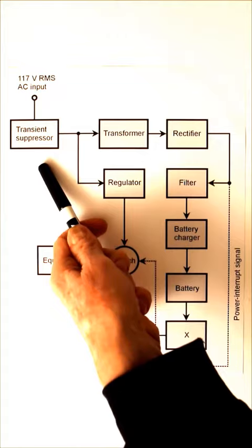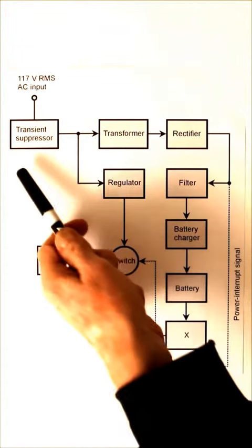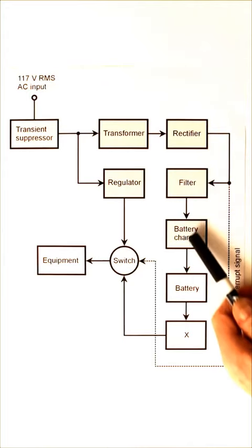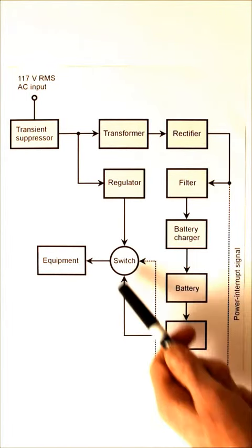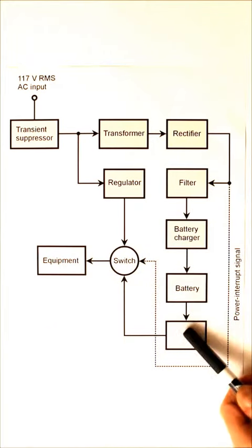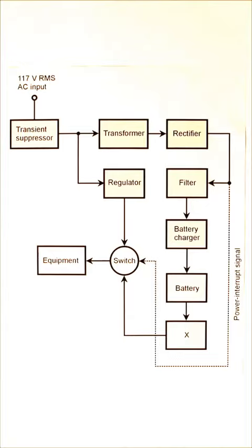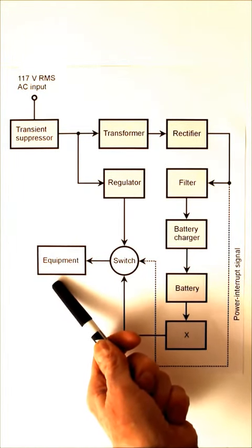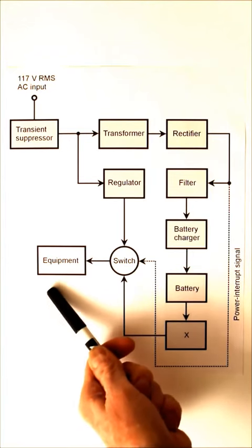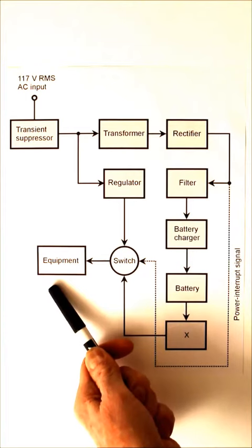When the power fails, however, then this system will provide battery power to the equipment and that battery power will be converted into 117 volts more or less alternating current, so that at least you have enough time to switch that computer off and shut it down properly.